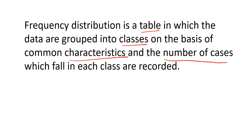Based on some common characteristics — maybe gender, like males or females — maybe age groups like 2 years old, 3 years old, 4 years old, or maybe people from age group 0 to 10, then 10 to 20, 20 to 30 and so on. And we see how many observations are falling in each category. So let's take an example.